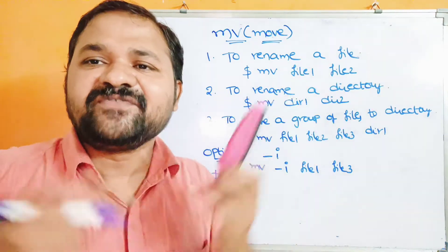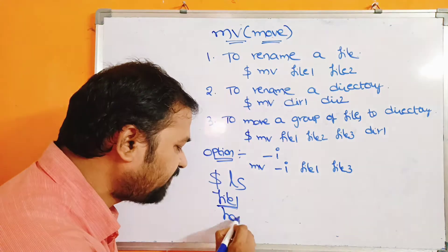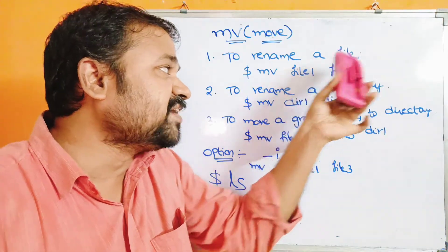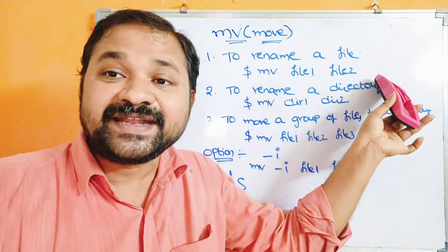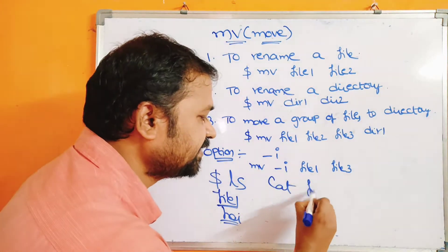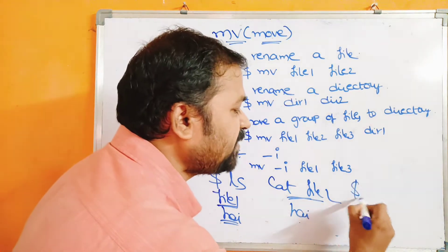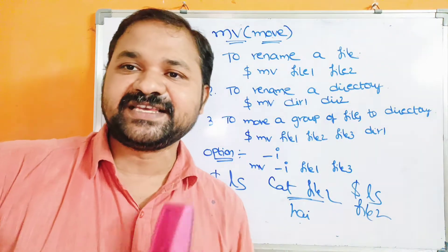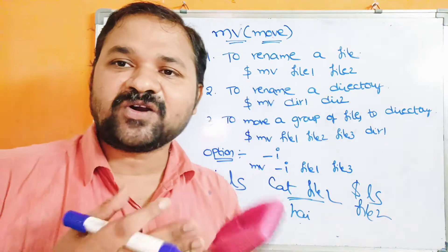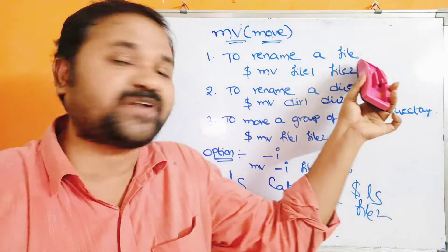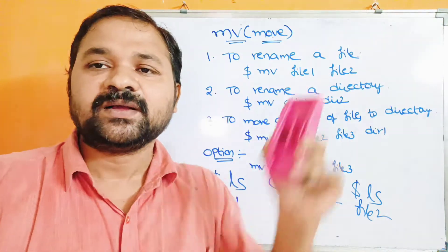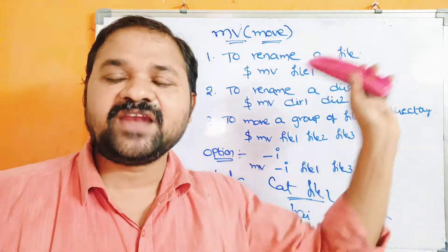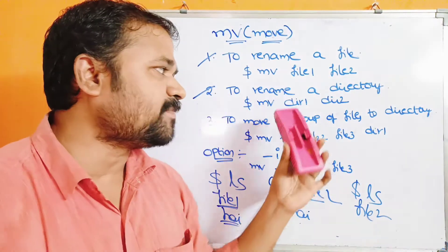Let's say file1's content is 'hi'. When we execute mv file1 file2, file1 will be renamed to file2, so now file2 contains 'hi'. If you display file2's content you will get 'hi'. If you run ls, only file2 will exist — file1 will no longer be available, because move means cut and paste.